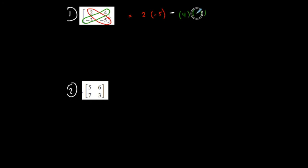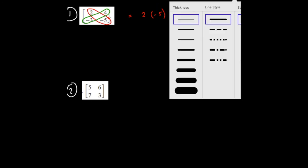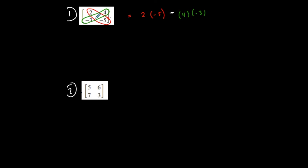And I'm not going to typically write all this out, but I'll do it for now so you see. So I'm taking this product minus this product. So negative 10 minus negative 12, which is negative 10 plus 12, or 2.